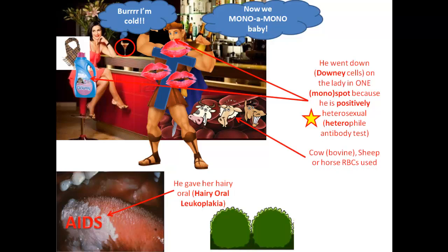One more thing to say about this heterophile antibody test — that's when you mix the serum, which has the heterophile antibodies of the patient, with blood from another species such as cow, which is a bovine, sheep, or horse. That's why I placed those animals on top of the red blood cell.